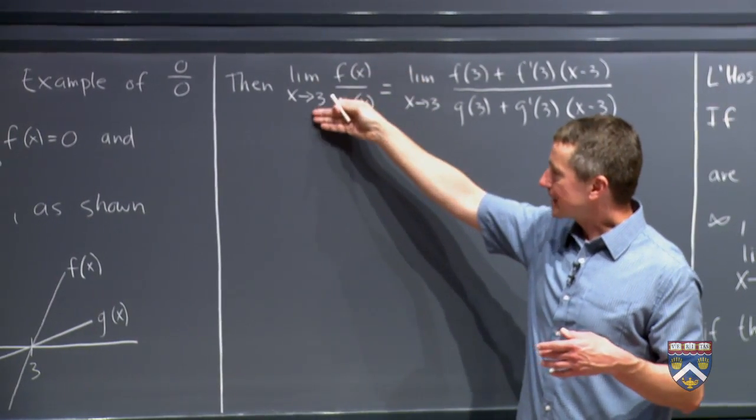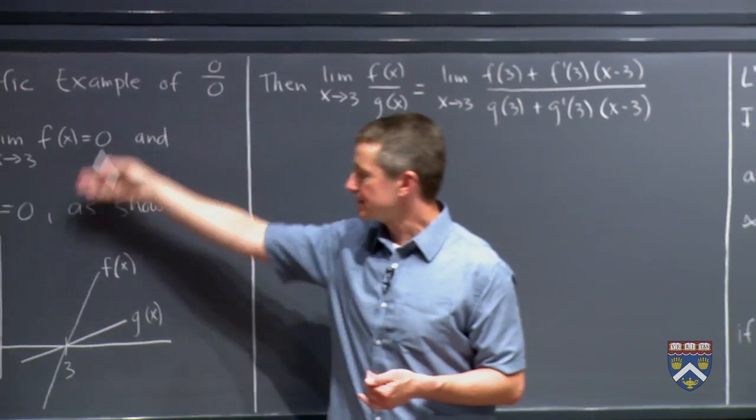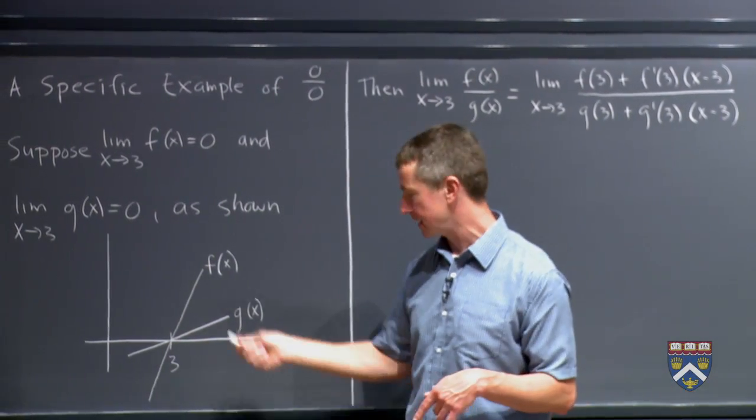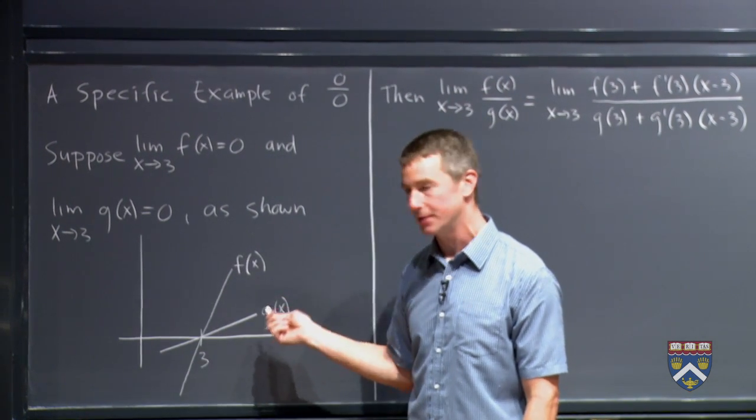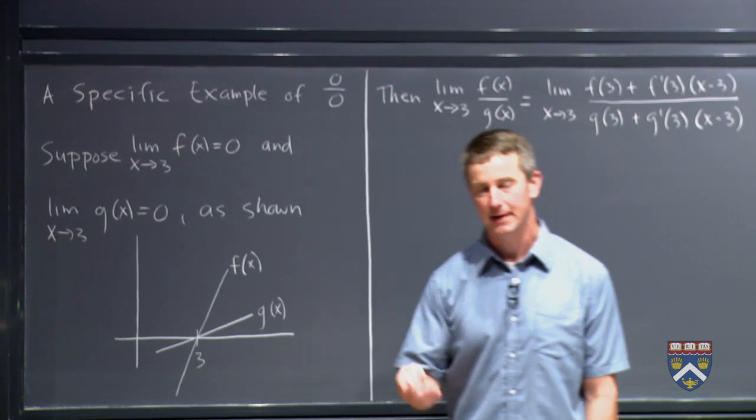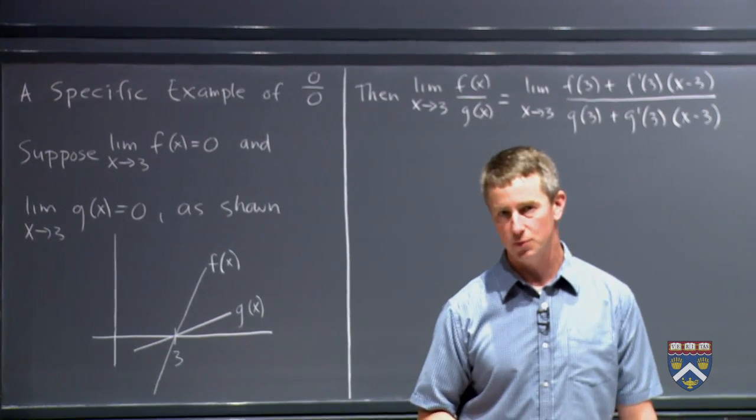Now we're saying that as x approaches 3, both of these are going to 0. And if we're going to be using calculus on this, we're going to need functions that are continuous. So we're going to say that these functions are continuous, which means that as x gets closer and closer to 3, if you look back to our definition of continuity from the first week, the limit has to equal the actual value at 3.